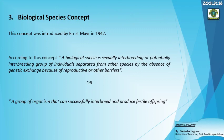The biological species concept is a much more widely accepted concept among biologists. It was given by Ernst Mayr in 1942. Previous species concepts classified organisms into species on the basis of morphological similarities, and they did not say anything about whether individuals belonging to the same species interbreed or not. The biological species concept provides this information.